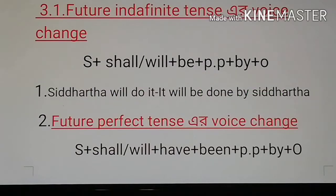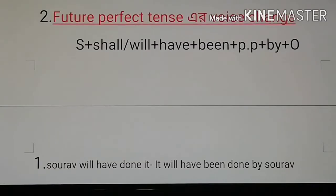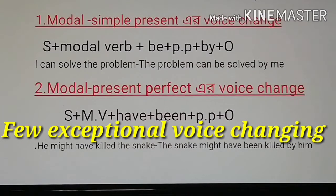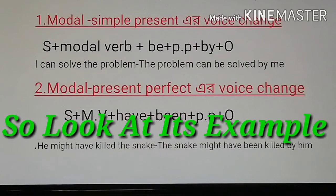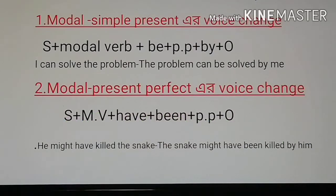Now let's see the modal simple present voice change. The formula is: subject + modal verb + be + past participle (PP) + by + object. Look at its example: 'I can solve the problem.' The passive voice form is: 'The problem can be solved by me.'